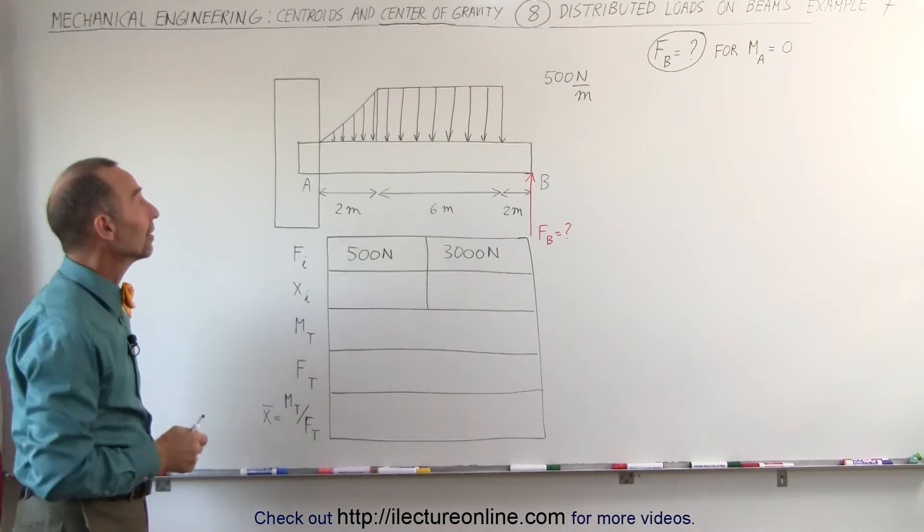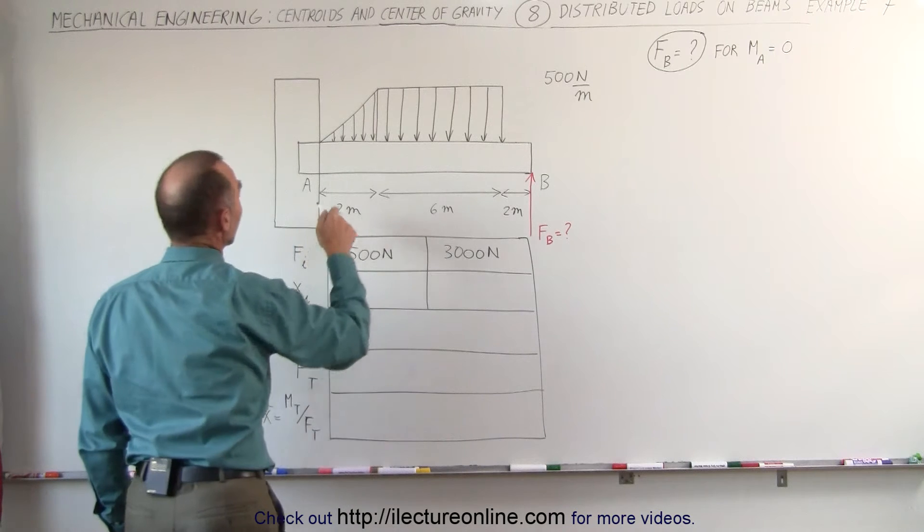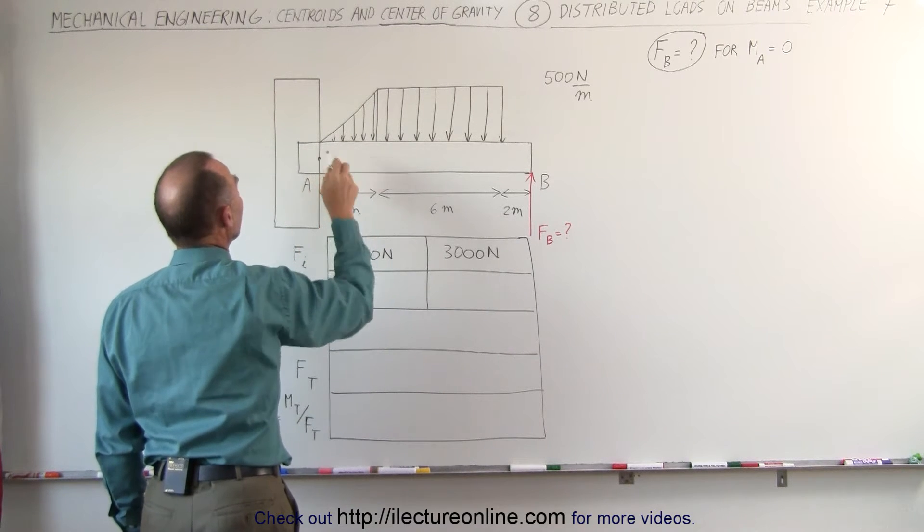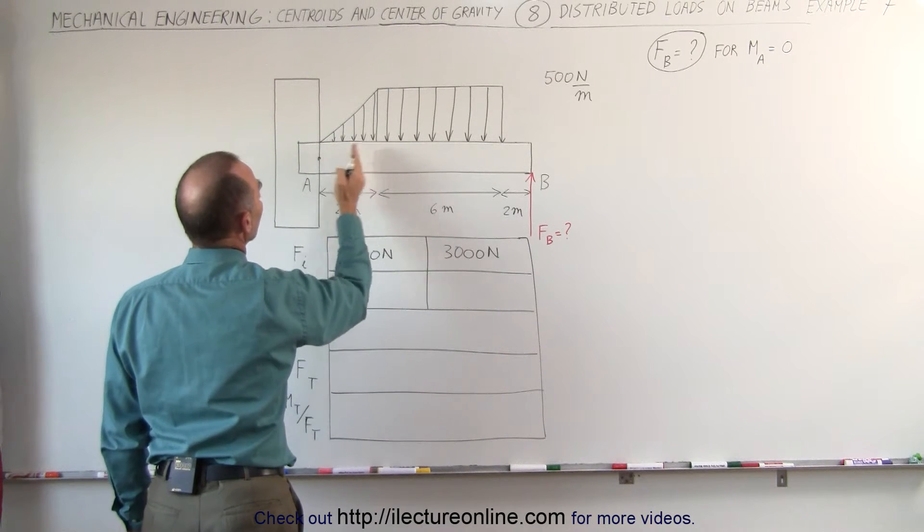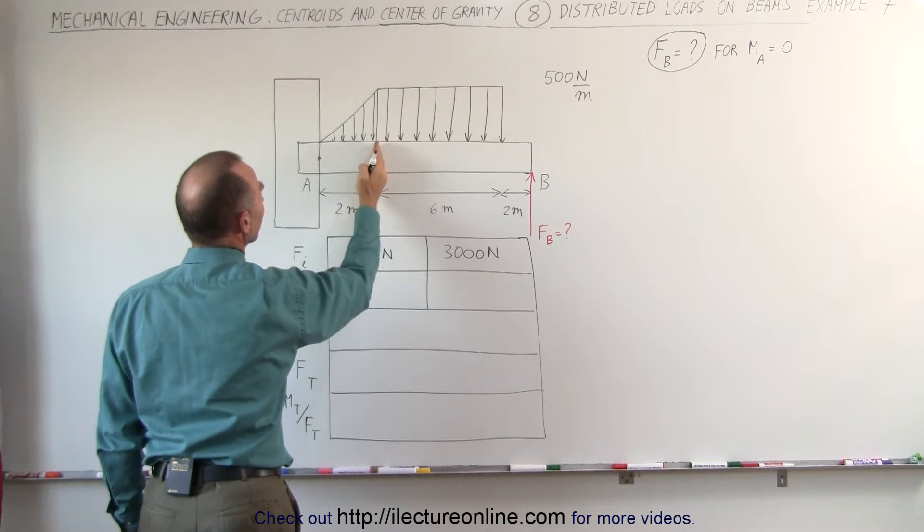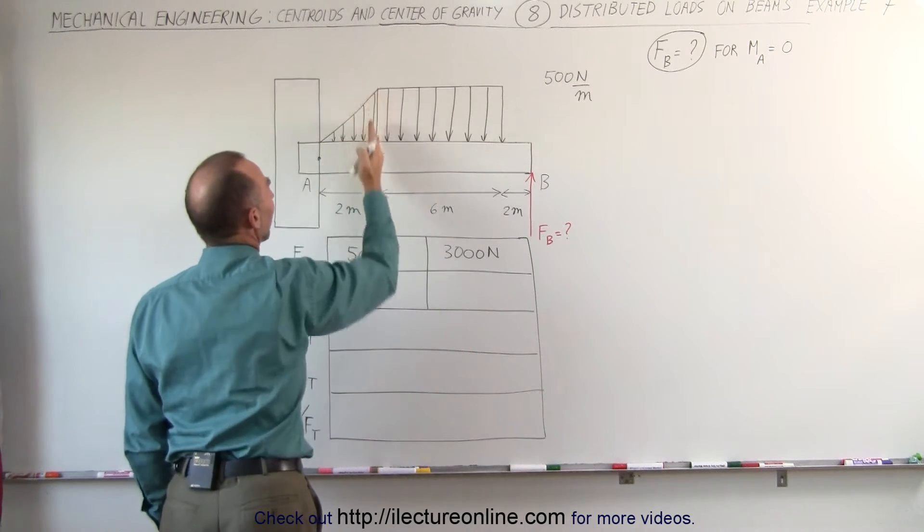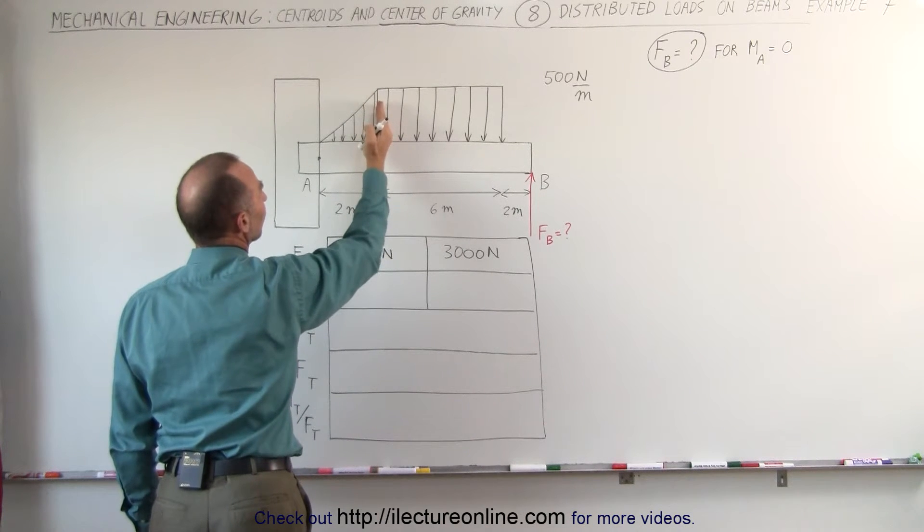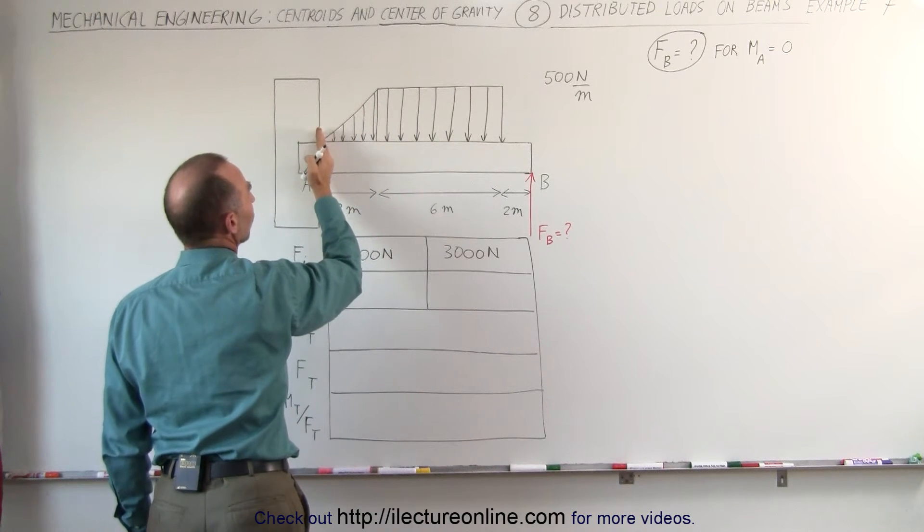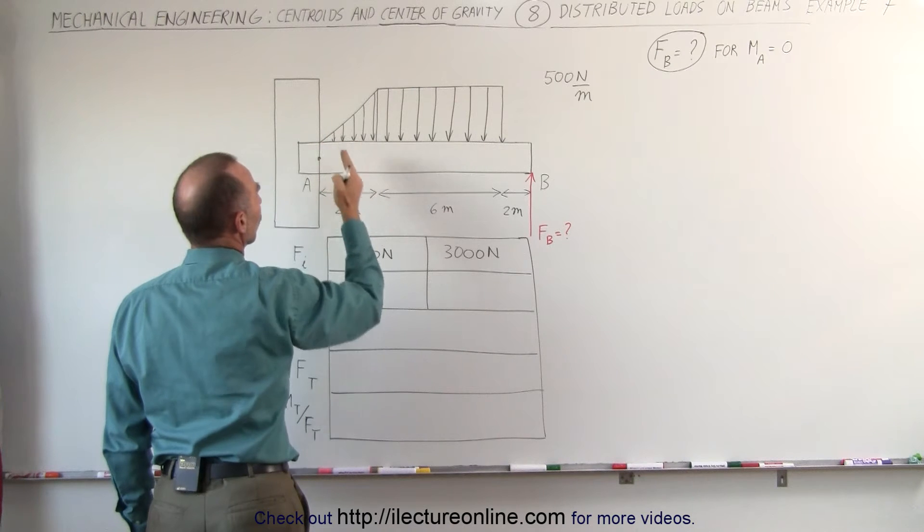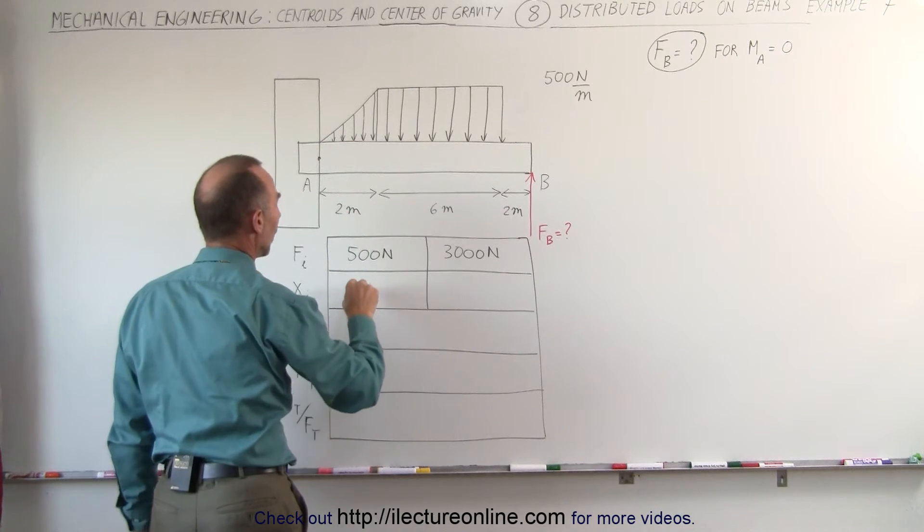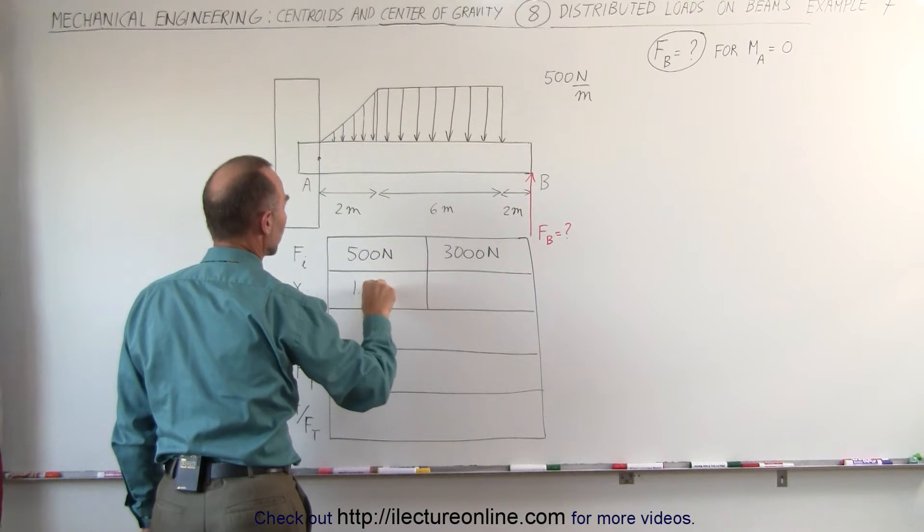Now the centroid for each segment. The first centroid, again, it will be relative to point A. It will be two-thirds the distance from here to the end of the triangle. Two-thirds because it's the point on the left side, the high side on the right. It will be one-third the distance from there to there, or two-thirds the distance from there to there. Two-thirds times two meters is one and a third meter, 1.33 meters.